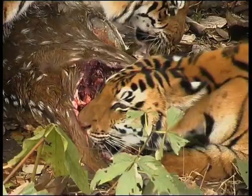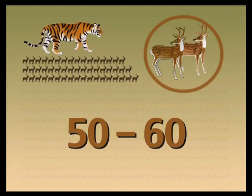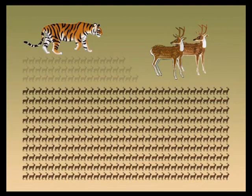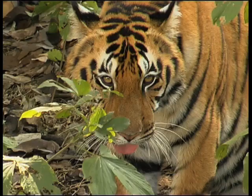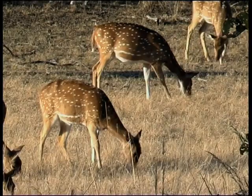Each adult tiger needs about 3,000 kilograms of live prey every year. They need large-sized prey and lots of it. To survive, a tiger needs to kill about 50 to 60 deer-sized prey animals per year. So for every single tiger in a forest, there needs to be a population of at least 500 prey animals that produce a surplus of 50 animals for the tiger to eat each year. Therefore, counting the number of prey animals in a forest will give us a rough idea of how many tigers the forest can support. That's why monitoring tiger numbers also involves counting the number of prey animals in a forest.